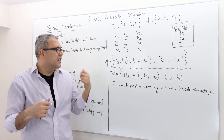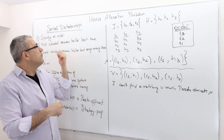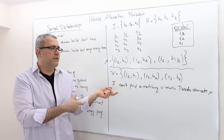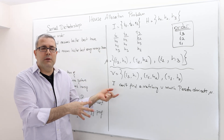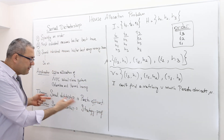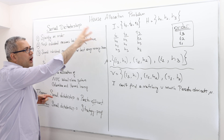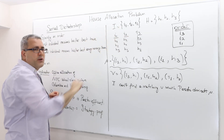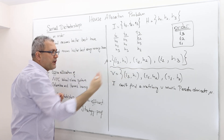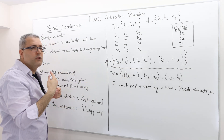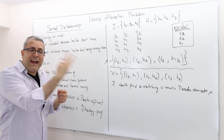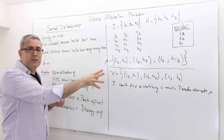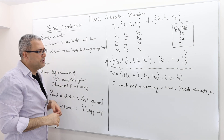That means I cannot find a matching v which proto-dominates mu. So that is not a proof that serial dictatorship is a Pareto-efficient mechanism — that is just an example to convince ourselves that serial dictatorship gives an efficient matching for one specific problem. But thanks to the theorem, whatever problem you pick — five individuals, five houses, different preference relations — the matching is going to be different, but you can show that it is also Pareto-efficient, with exactly a similar kind of argumentation.